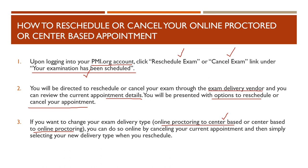If you want to change your delivery type — for example, you had selected online proctoring but now want to go to the center, or vice versa — you can do so online by first cancelling your appointment and then selecting your new delivery type when you reschedule the exam. These are the three steps you need to take to reschedule or cancel your exam appointment.